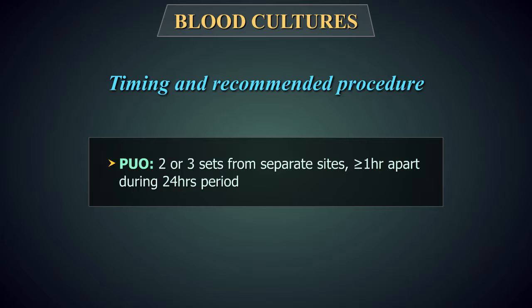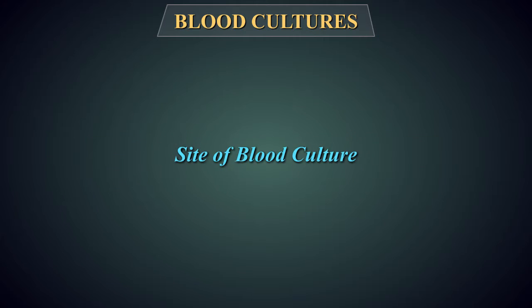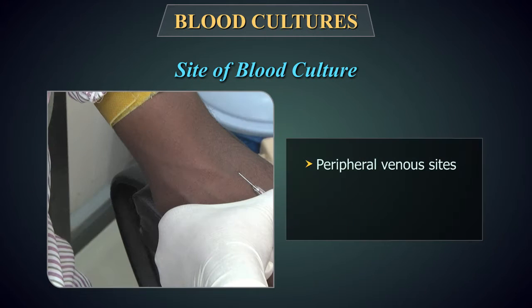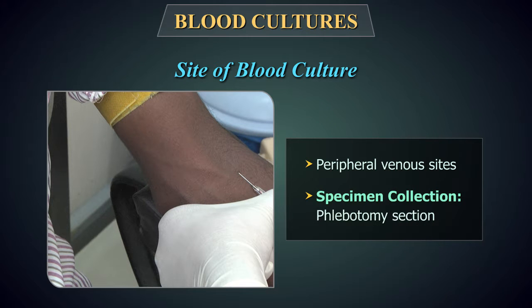If negative, at 24-48 hours, obtain two or three more sets. Site of Blood Culture: Blood should be obtained from peripheral venous sites. Refer to the phlebotomy section for correct sample collection techniques.